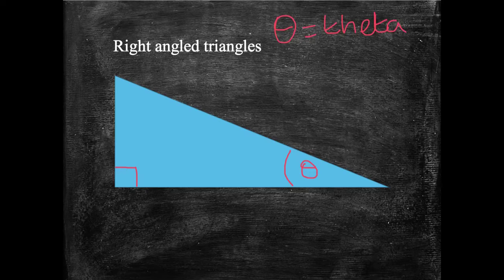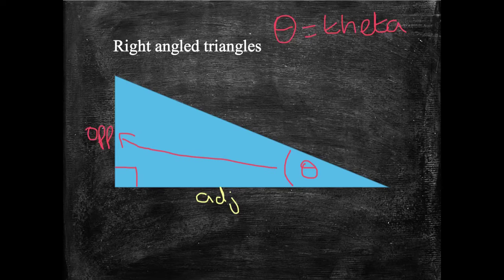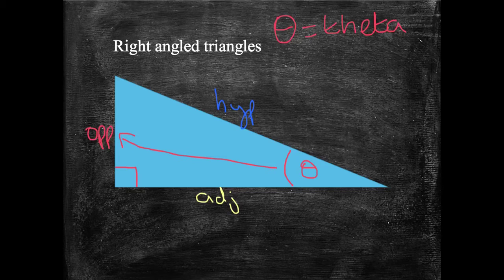Sometimes we use x, but it's more common to use this letter theta. Opposite the angle is over here, because it's on the opposite side. Next to the angle, or adjacent to the angle, is down here. And the final side is called the hypotenuse. It's the one that's the longest side, and that's always opposite the right angle. So we've got opposite, adjacent, and hypotenuse.